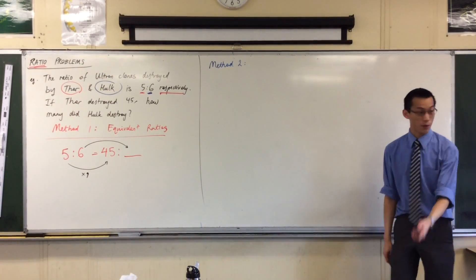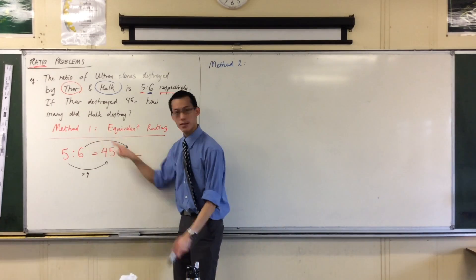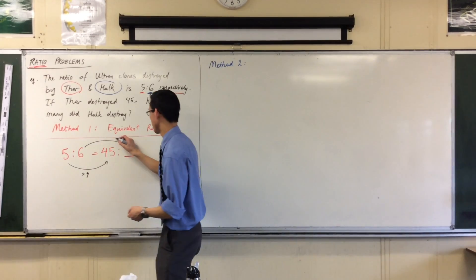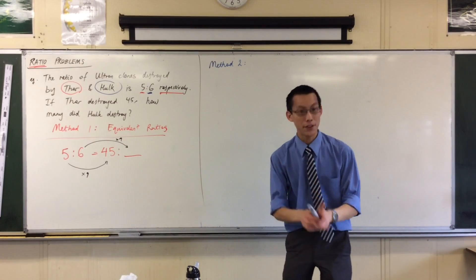So, if I've got equivalent fractions here, equivalent ratios, to get from one to the other, I'll do the same operation, which is multiplication by nine. And I think some of you already worked out. Six times nine is? Fifty-four. Thank you very much.